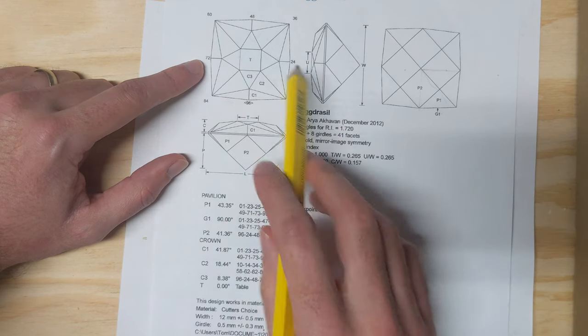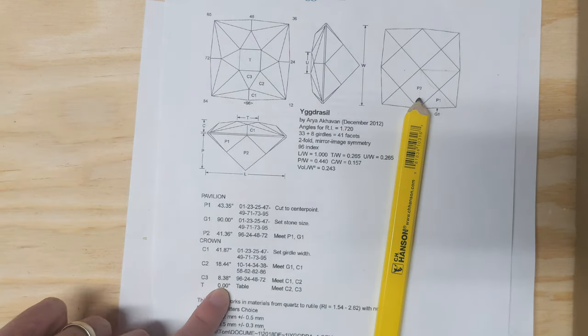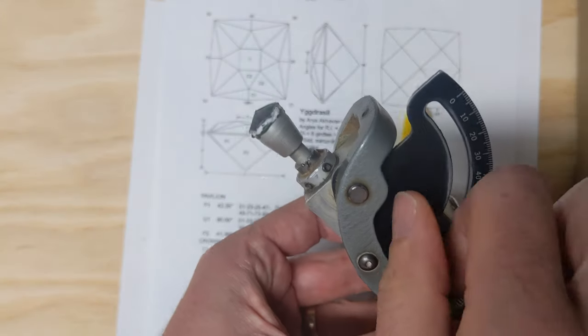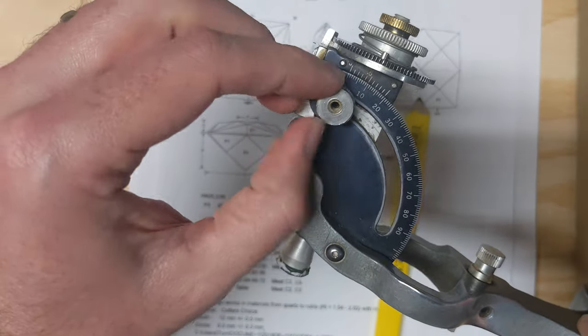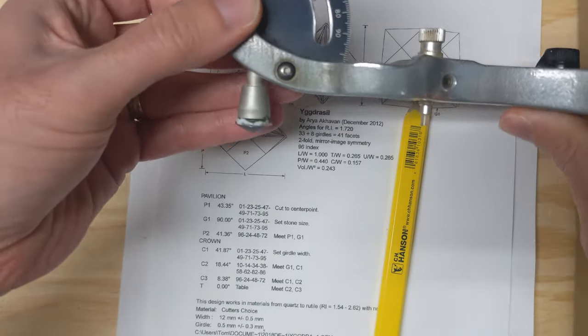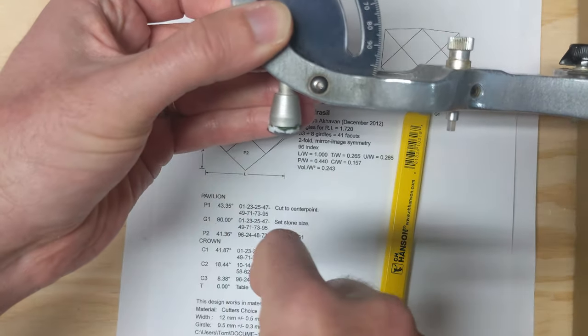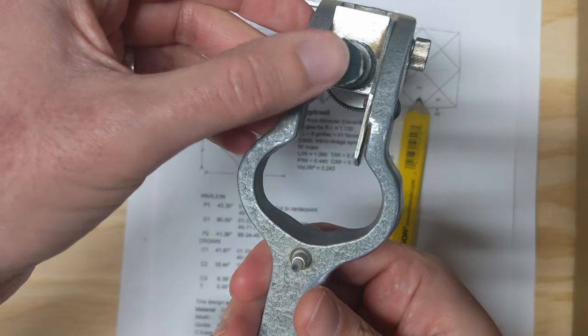For the table, you set it at zero degrees, so obviously opposite of 90 on this protractor. Slap it up to 90, lock it in, and then your stone is facing straight down towards the lap and you cut in the crown table.